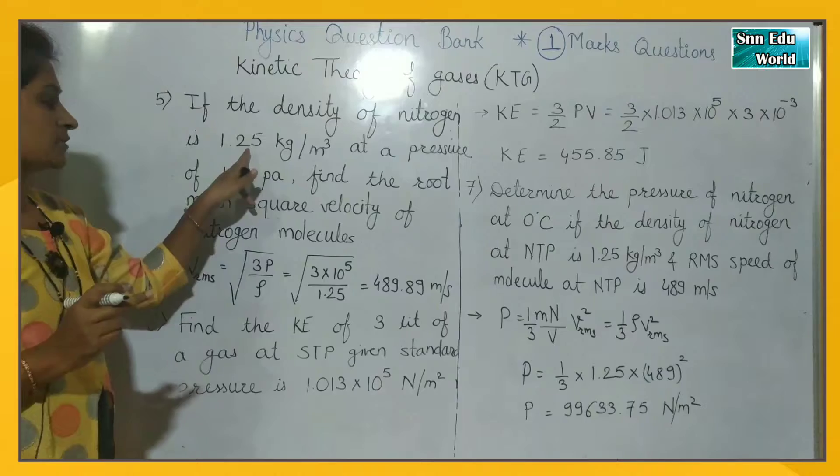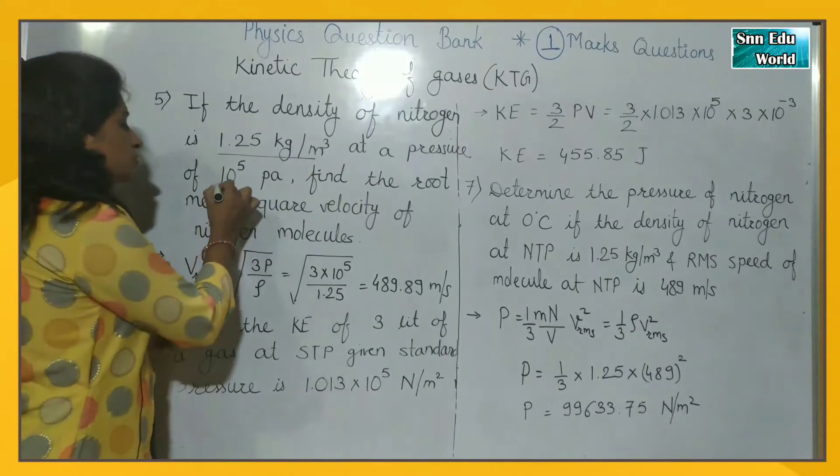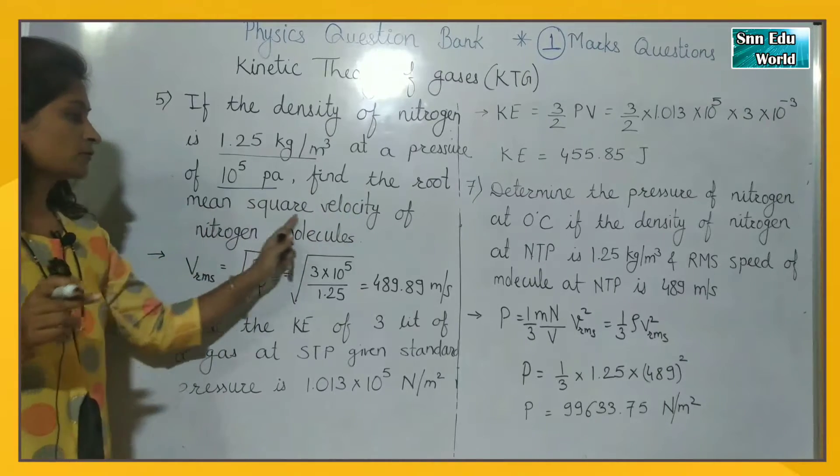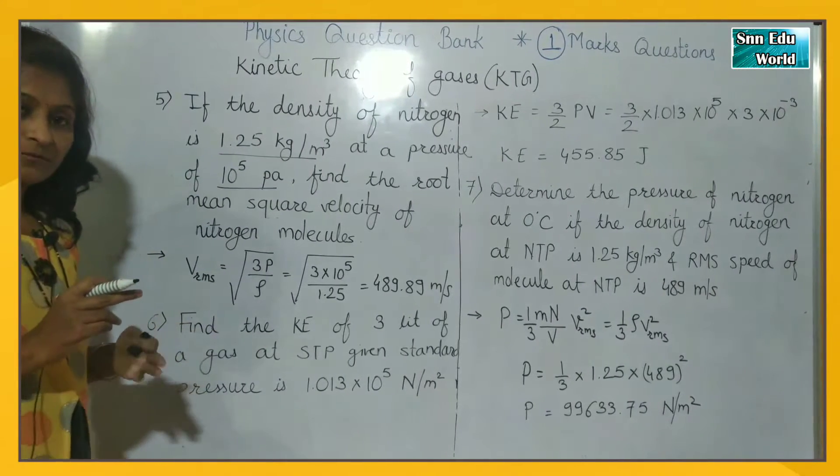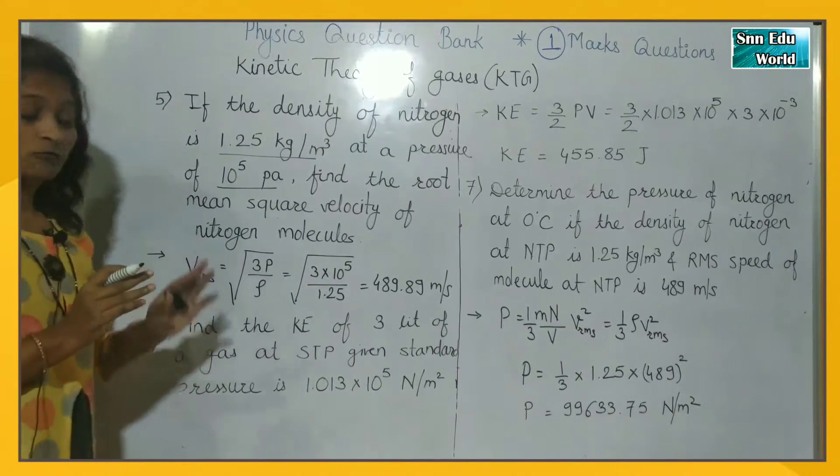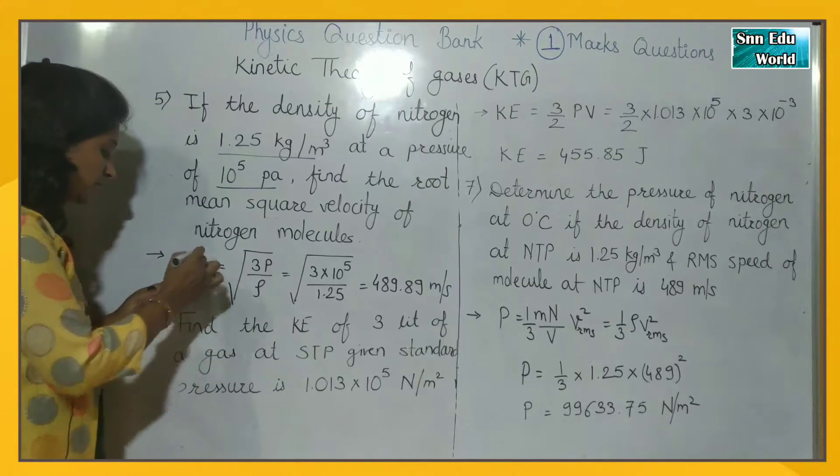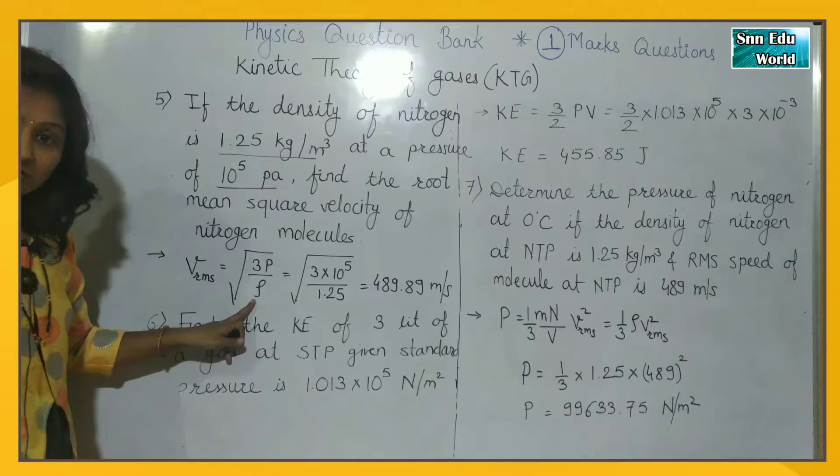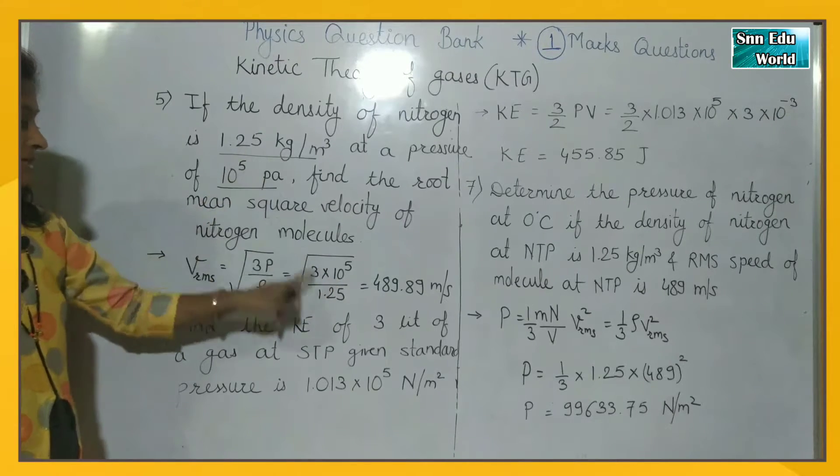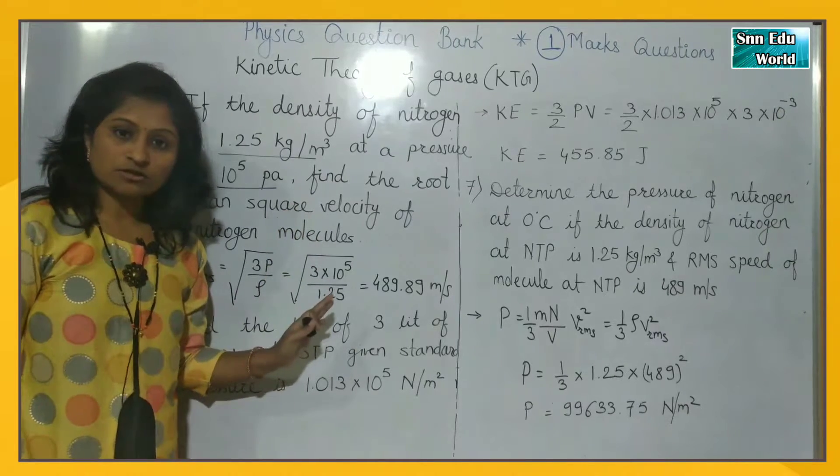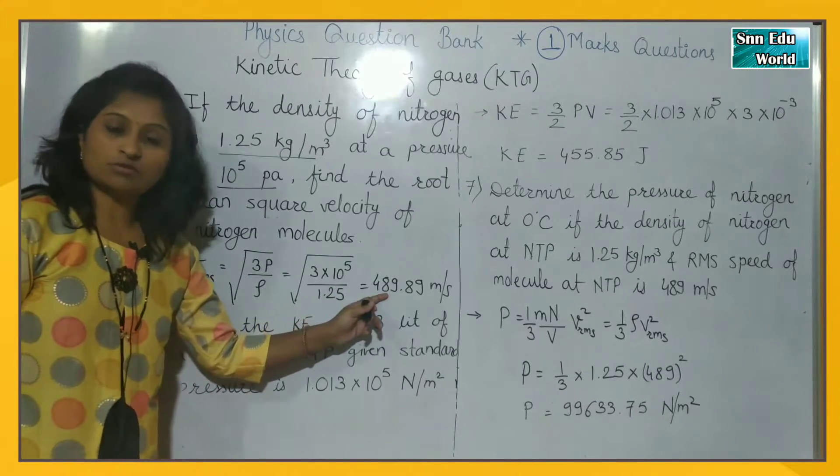Next question. If the density of nitrogen is 1.25 kg per meter cube at a pressure of 10 raise to 5 Pascal, find the root mean square velocity of nitrogen molecules. So density and pressure are given. We can use the formula for Vrms. Everything is given in SI unit, so substitute as it is. When you solve this using the calculator, you will get this answer: 489.89 meter per second.